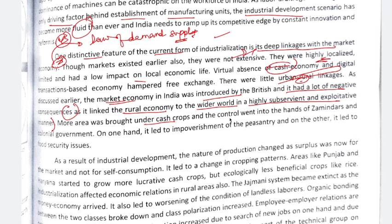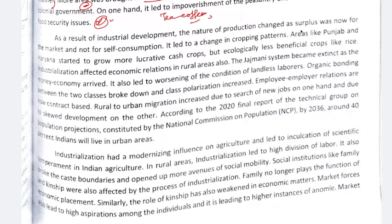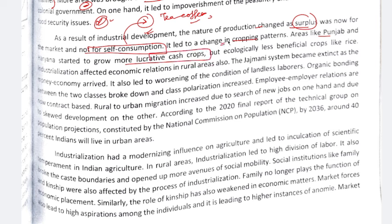More area was brought under cash crops and control went into the hands of the colonial government. Producing cash crops like tea and coffee is more profitable but not good for food security — food security issues increased as a result. As a result of industrial development, the nature of production changed — surplus was now for the market and not for self-consumption. Cropping patterns changed: Punjab and Haryana started growing more lucrative cash crops, which though financially beneficial are poor for the environment.